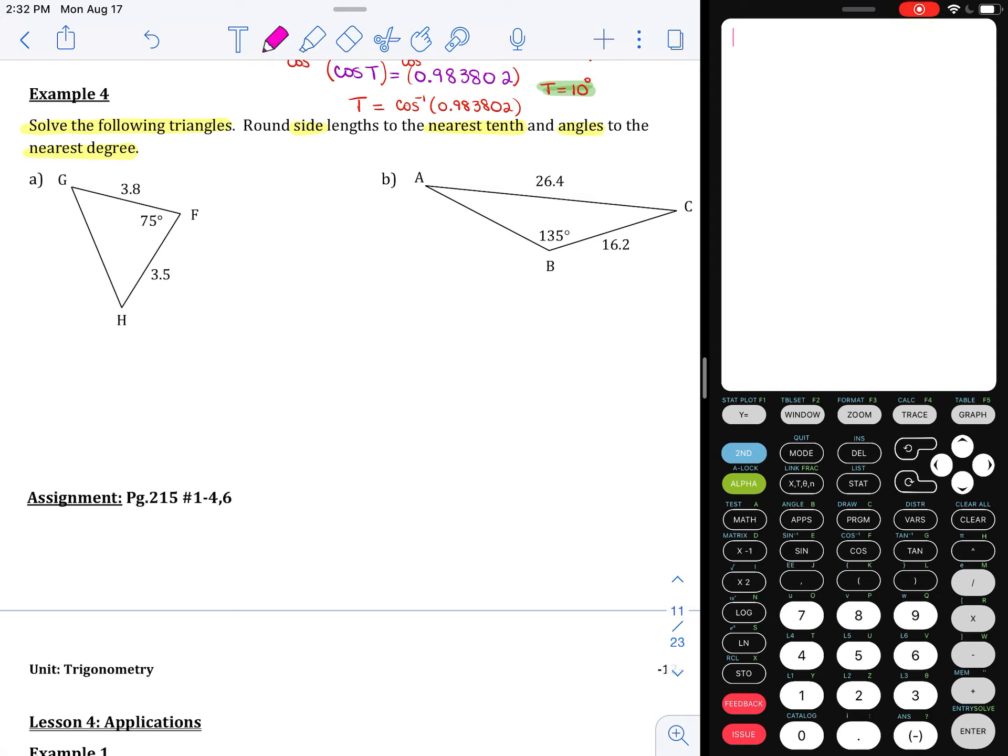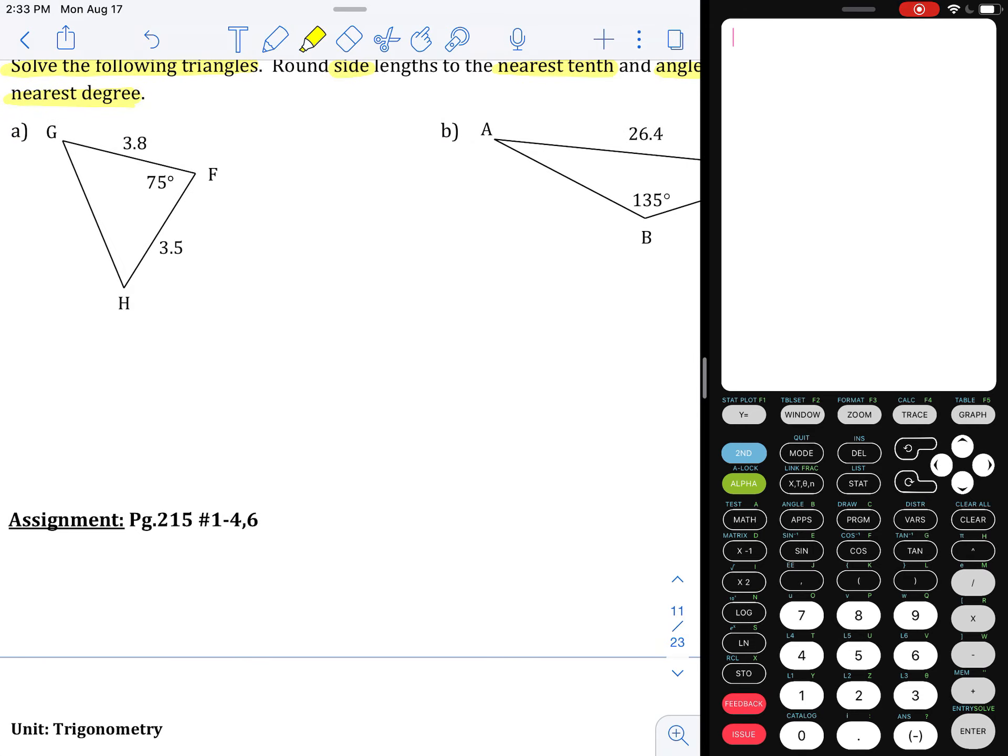So we look at A. We see that we're missing a side and two angles. So we ask ourselves, can we use SOHCAHTOA? Answer is no. We don't have a right angle triangle. We can't use Pythagorean theorem for the same reason. So then we try to use the sine law. Do we know an opposite angle side combination? The answer is no. I know angle F, but I don't know little f. I know side G, but I don't know angle G. I know side H, but I don't know angle H. So I can't use the sine law. But because I know side angle side...